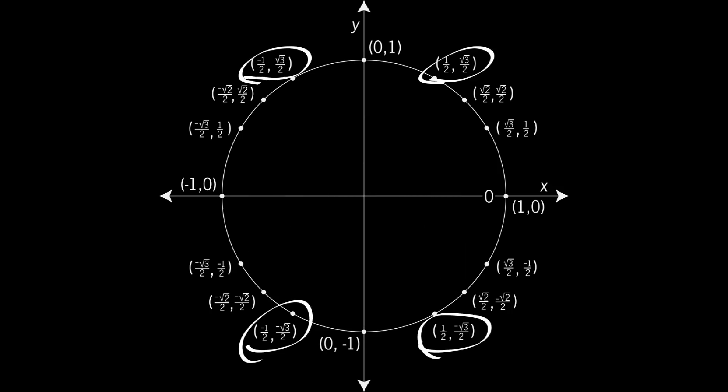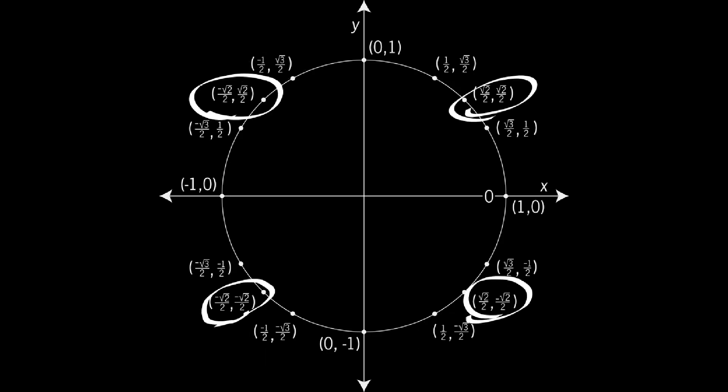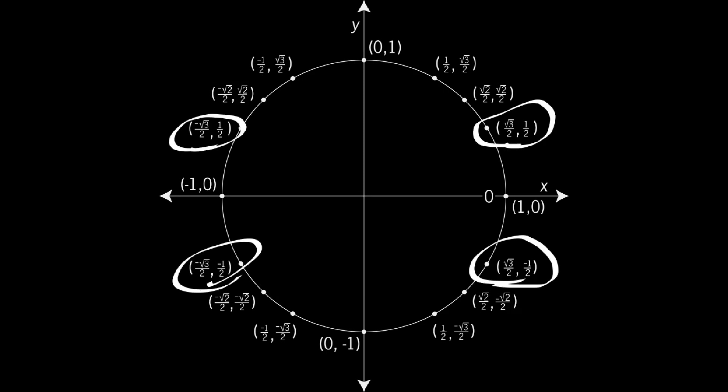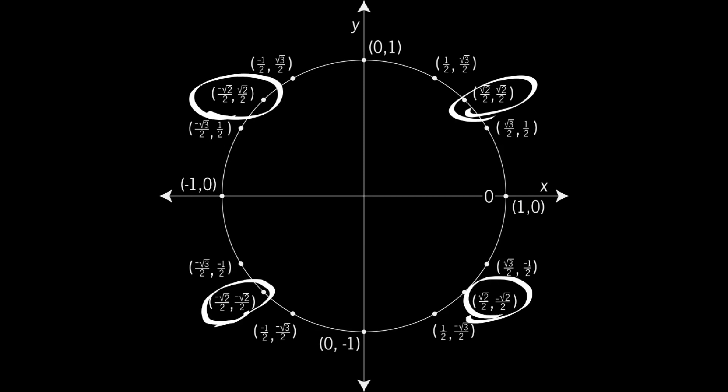Finally, the actual values at each of those points are also symmetric across both the y- and x-axes. Again, this makes it a lot easier to simply recreate them given the values for one of the quadrants, for example, quadrant one.